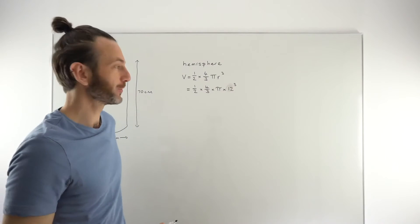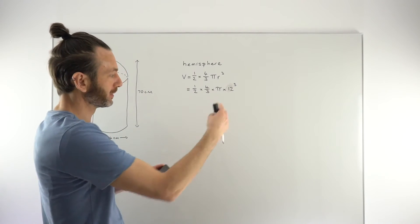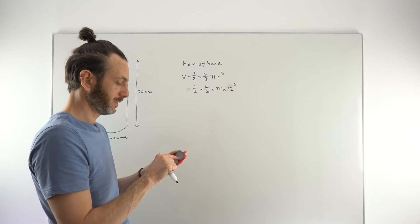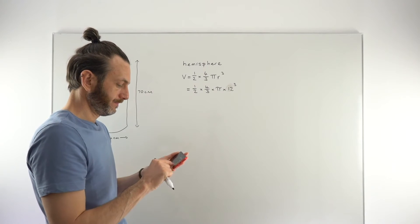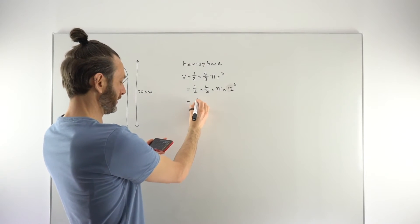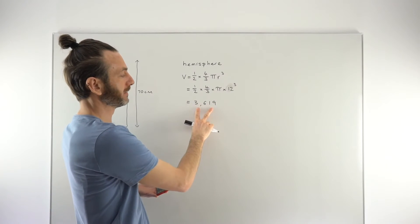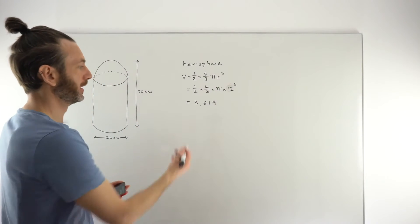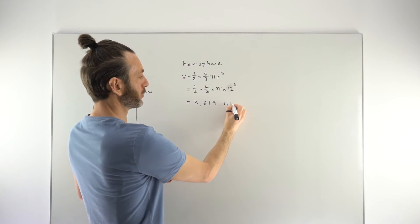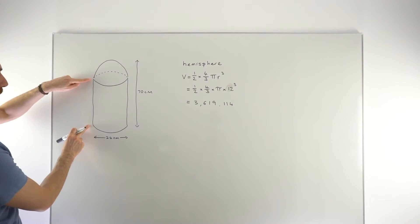For the hemisphere: V = ½ × (4/3) × π × 12³. This is very much a calculator question, so putting these values in carefully. The result comes out to approximately 3619. We don't need decimal places since the answer is requested to three significant figures.